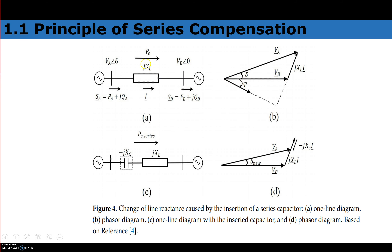This is the reactance of the transmission line. Without any compensation it will have XL, because the resistance of the transmission line is neglected — it is very small compared to the reactance. So only reactance is considered in the equivalent circuit diagram.